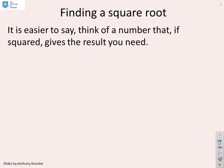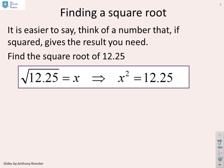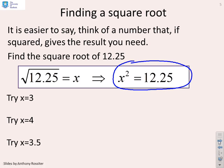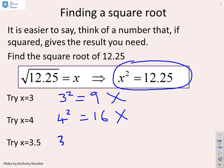It's easier to think of a number that, if squared, gives the result you need. For example, find the square root of 12.25, and we're going to do this by iteration. We want to find a number such that when we square it, we get 12.25, so x squared equals 12.25. Let's do some trial and error: try x equals 3 — well, 3 squared equals 9, that's not right. Try 4 — 4 squared equals 16, that's not right. One was too small and one was too big, so try a number in the middle. If you try 3.5 squared, you get 12.25, and therefore a possible answer is x equals 3.5.